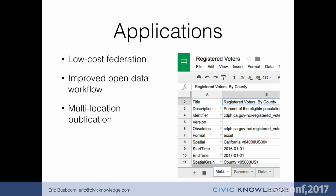We're looking at using this for low-cost federation — bringing a bunch of data together and putting it in a single database. We want to improve open data workflow, particularly in health departments and county departments that publish this data. One feature I really like for our own work is being able to publish to multiple places. Once I've created the metadata in MetaTab, I can use our tooling to send it to data.world, to CCAN, and wherever else I want, while managing it locally on my own drive and my own GitHub account.